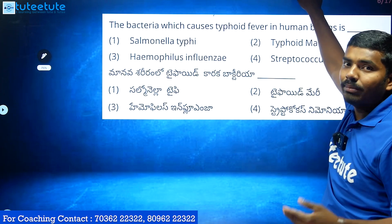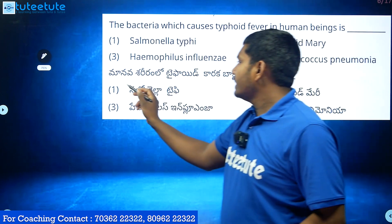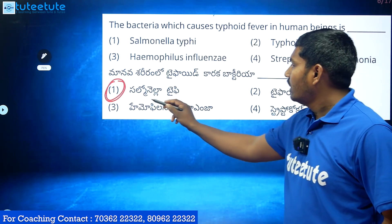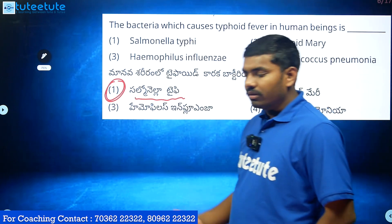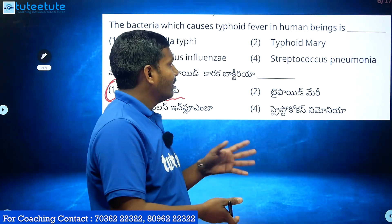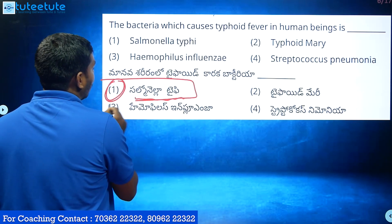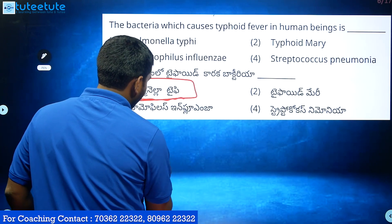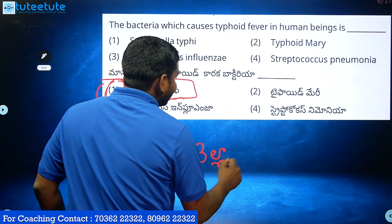Typhoid is caused by Salmonella Typhi. It is a type of bacteria. The name of the bacteria that causes typhoid is Salmonella Typhi.